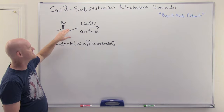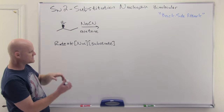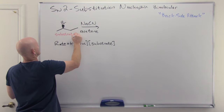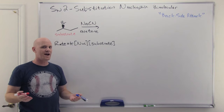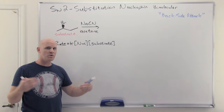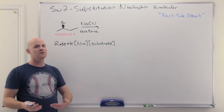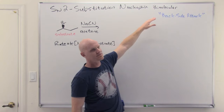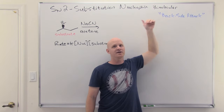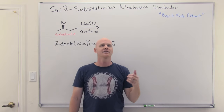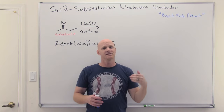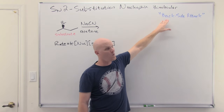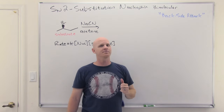Let's look at an example: 2-bromobutane reacting with sodium cyanide in acetone. Here, 2-bromobutane is our substrate, and bromide is a good leaving group. We know from gen chem that HBr is a strong acid, so Br⁻ — the conjugate base — is an extremely weak base, which is the hallmark of a good leaving group. It needs to be stable after it leaves, and being a really weak base indicates that stability. The hallmark of the SN2 mechanism is called backside attack — that's the first thing that should come to mind when you think SN2.